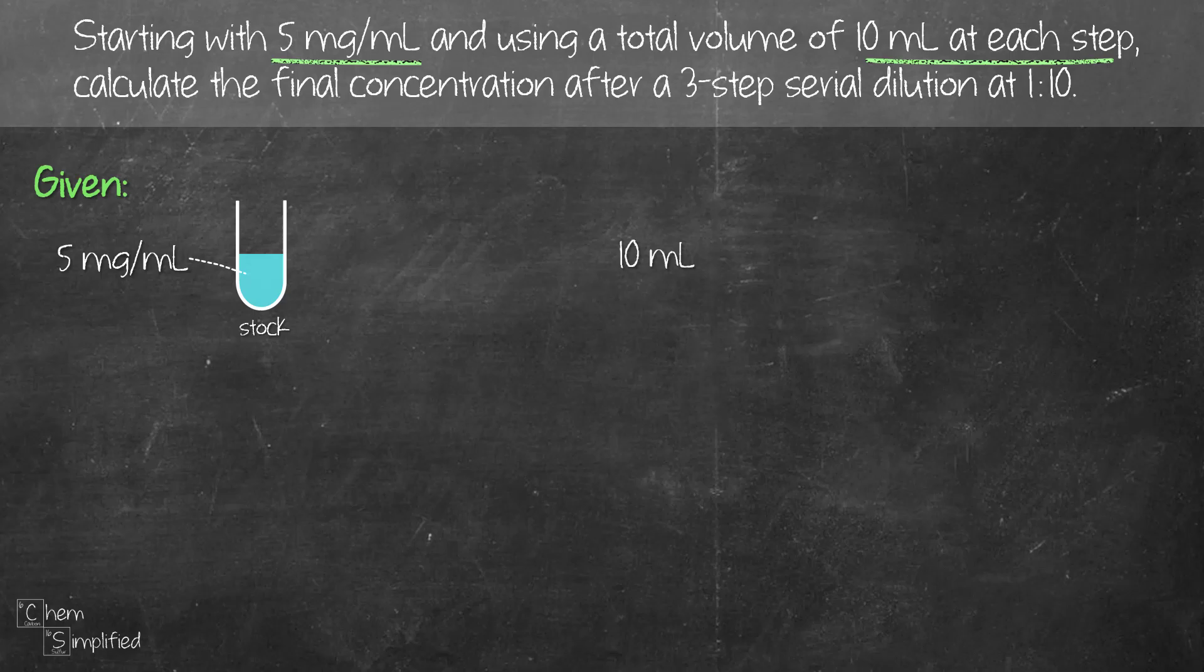We're gonna keep that in mind and see what that means. It's going through a three-step serial dilution. Which means we're gonna have three test tubes, we're gonna do three series of dilution, and we're doing that at 1 to 10 ratio. So that's actually a dilution factor of 1 to 10.